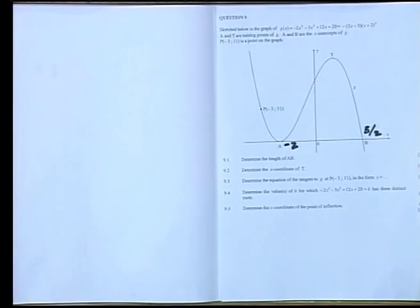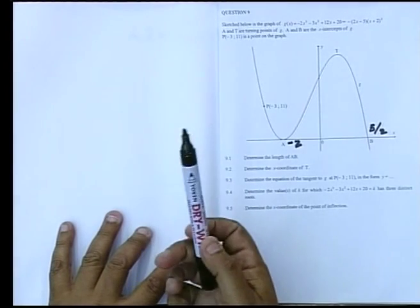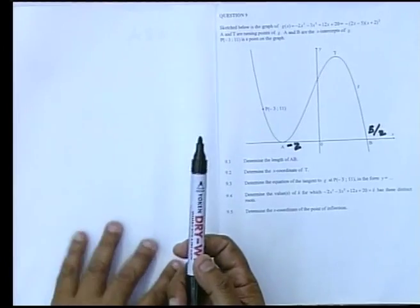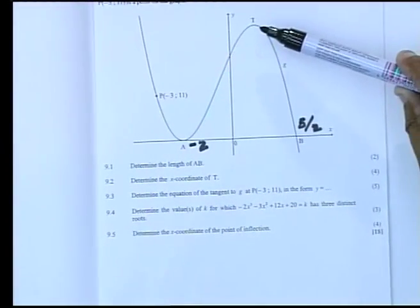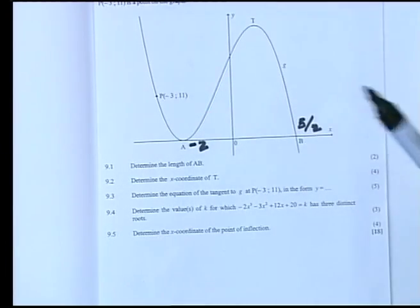In 9.2, they are asking you to determine the x-coordinate of point T. Now, if you read the question at the start, the point T is one of the turning points for this cubic graph.